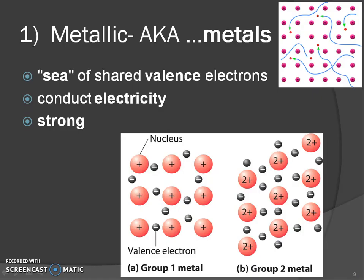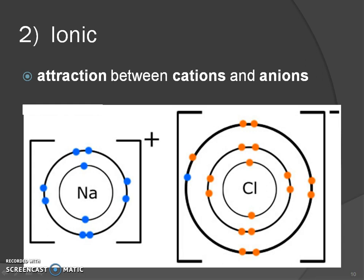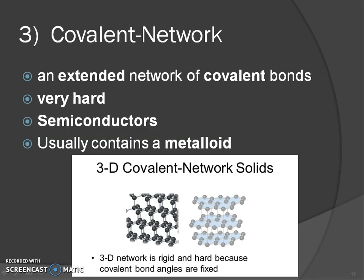There are five types of solids. The first is metallic — a sea of valence electrons constantly moving, making them strong conductors of electricity. Ionic solids are the attraction between positive cations and negative anions. Then the new type: covalent network solids. They have an extended network of covalent bonds, are very hard, usually semiconductors, and usually contain a metalloid. Two 3D covalent network solids are carbon graphite and carbon diamond.